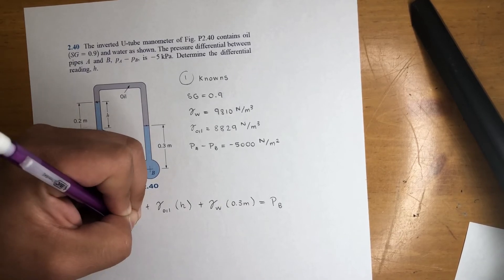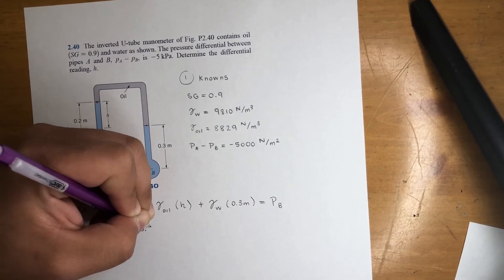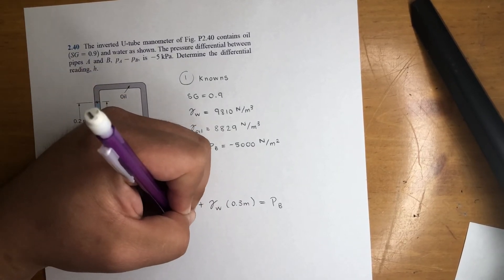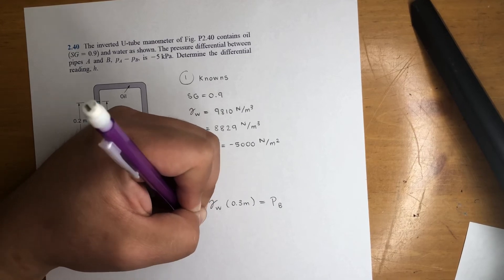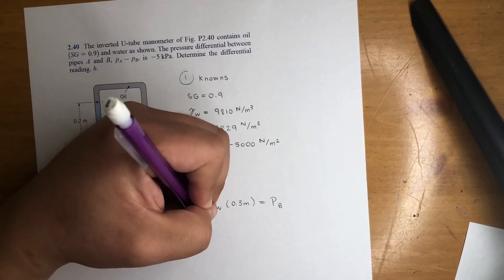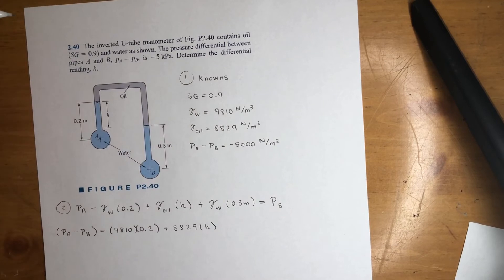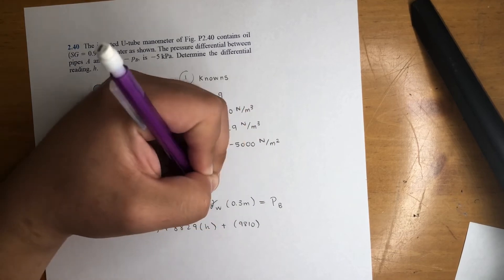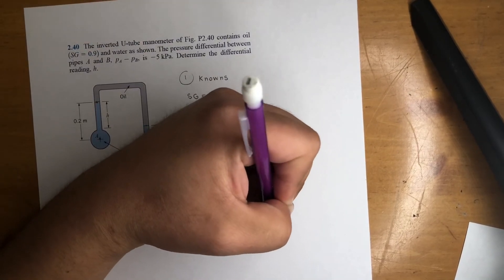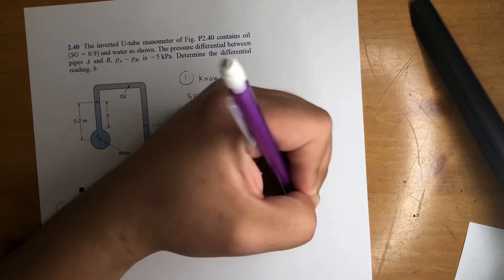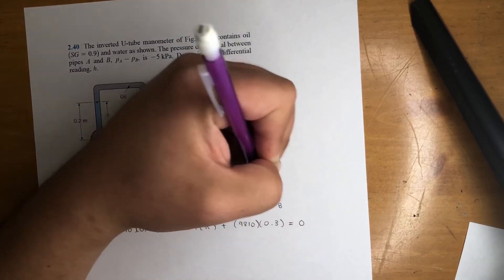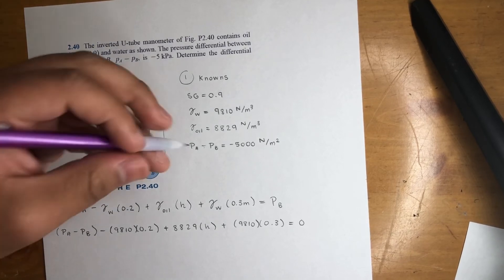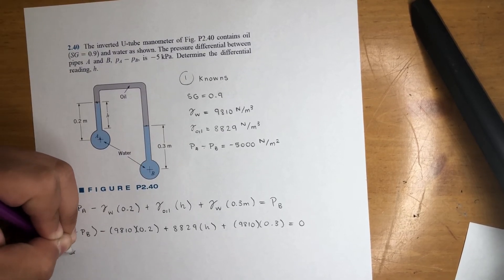9810 times 0.2 plus gamma of oil, that is 8829 times our height that we're looking for, plus 9810, right? Gamma of water times 0.3 is equal to zero. This moved over here. We know this value right here. That's why I like to do parentheses just in case I mess up, but it's negative 5,000.